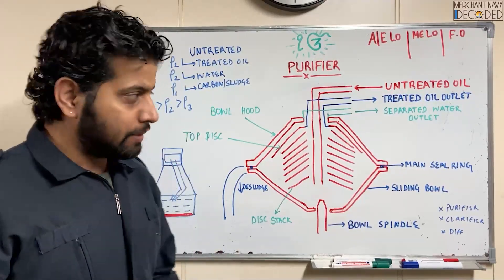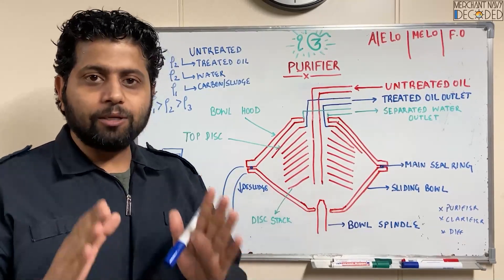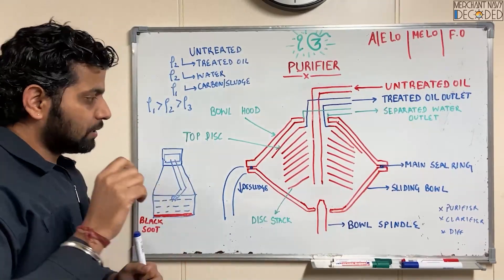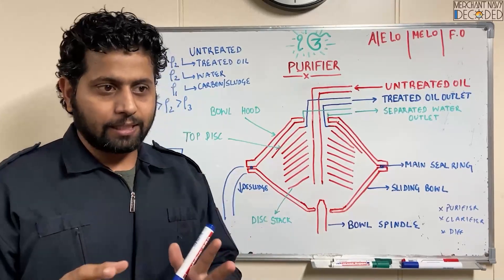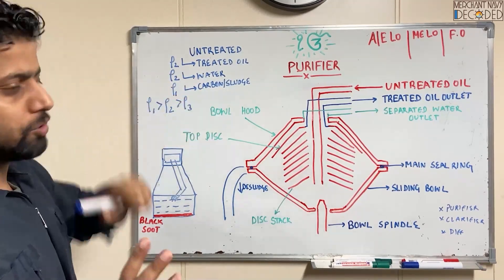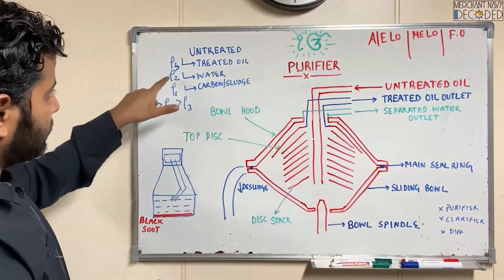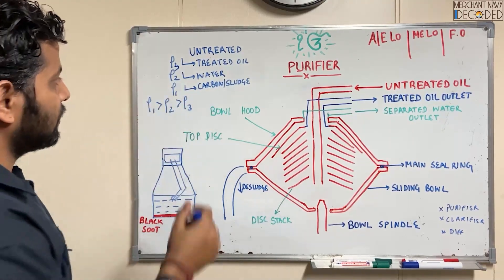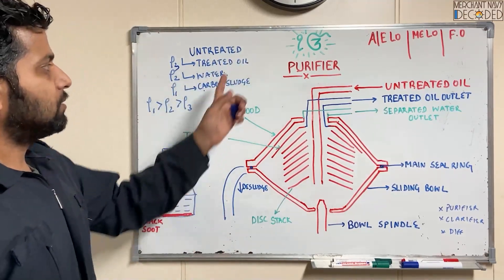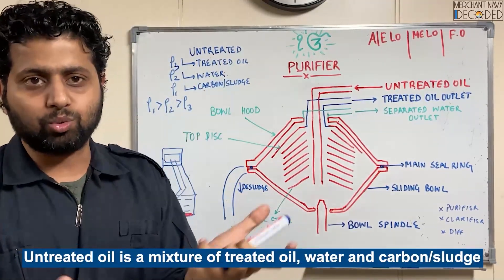Hi everyone, Jai Matadi. In this video I am going to talk about the difference between a purifier and a clarifier. The difference starts in basics. If I have got untreated oil, it will have water and it will have carbon or sludge. Treated oil density is rho 3, water density is rho 2, and carbon/sludge density is rho 1. Carbon/sludge will always have a higher density than water, and water will always have a higher density than treated oil — that means clean oil. So we had a dirty oil which had a mixture of water, clean oil, and soot and sludge.